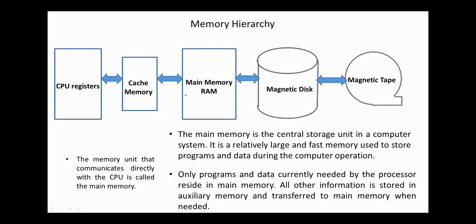The next memory in the hierarchy is the main memory or RAM. The main memory is the central storage unit in the computer system. Main memory is used to store programs that are currently under processing. Other programs and data are stored in auxiliary memory and transferred to main memory when needed.